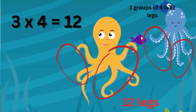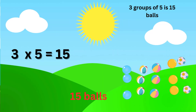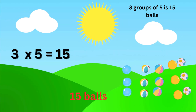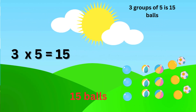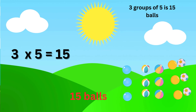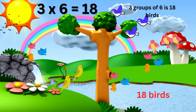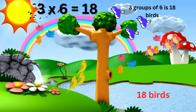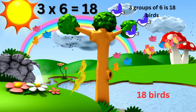3 times 5 is 15, they are 15 balls. 3 times 6 is 18, they are 18 birds.